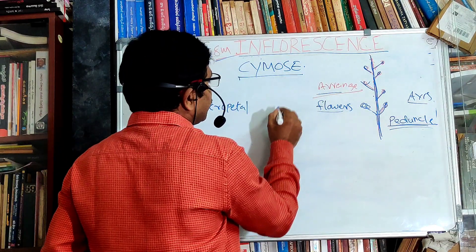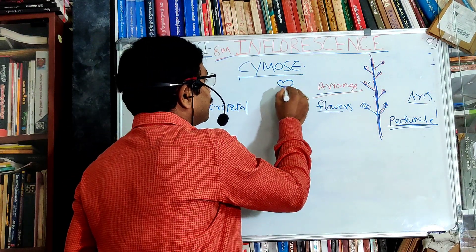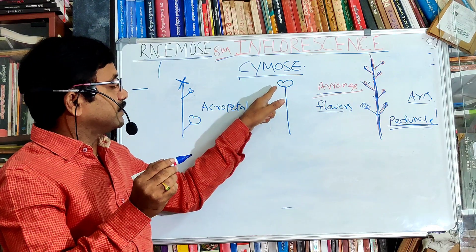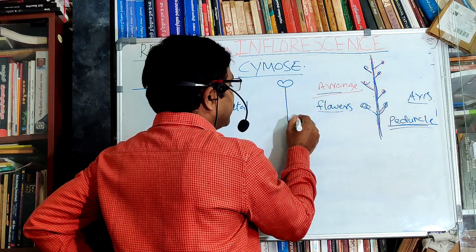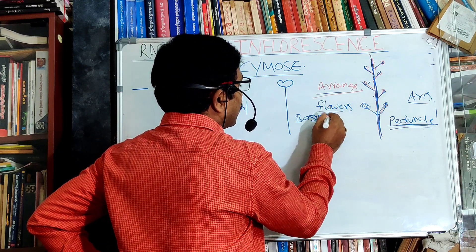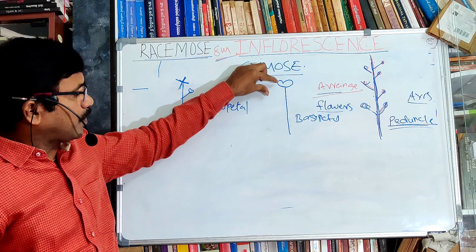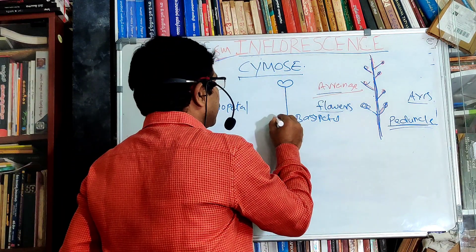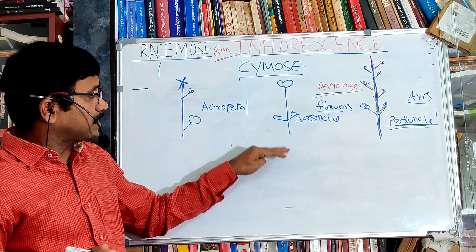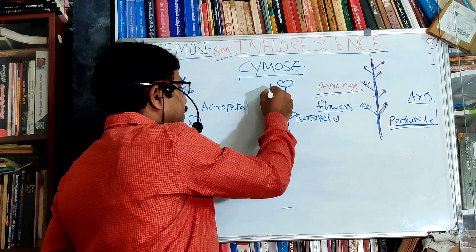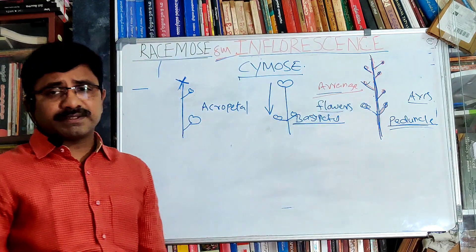In cymose inflorescence, the growth of the peduncle is limited and terminates into a flower. The flowers are arranged in a basipetal manner — the older flower is formed at the tip of the peduncle, whereas younger flowers are present at the basal part. This arrangement from apical to basal region is known as basipetal.